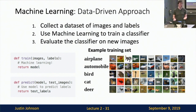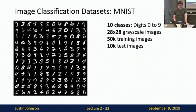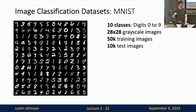Now that we've settled on a data-driven approach, let's talk about common datasets. MNIST has 10 classes (digits 0–9), with 28×28 grayscale images, 50,000 training and 10,000 test images. It was used for the industrial application of recognizing handwritten digits on checks, with rich history in developing many machine learning algorithms. MNIST has been called the drosophila of computer vision — useful for quick initial experiments — but essentially every reasonable algorithm gets high performance on it, so results here aren't very impressive anymore.